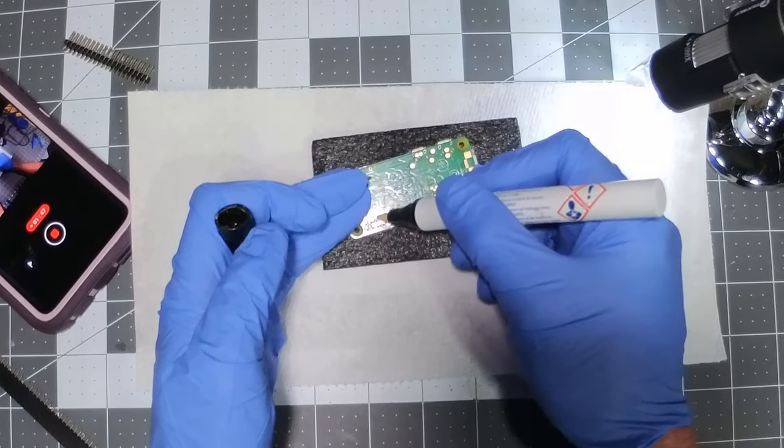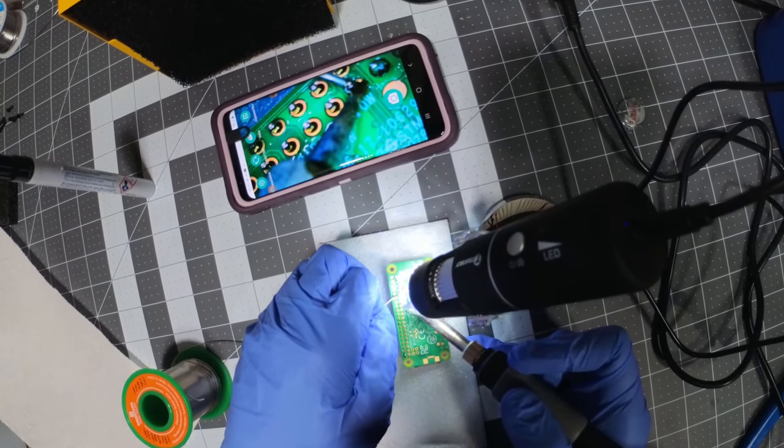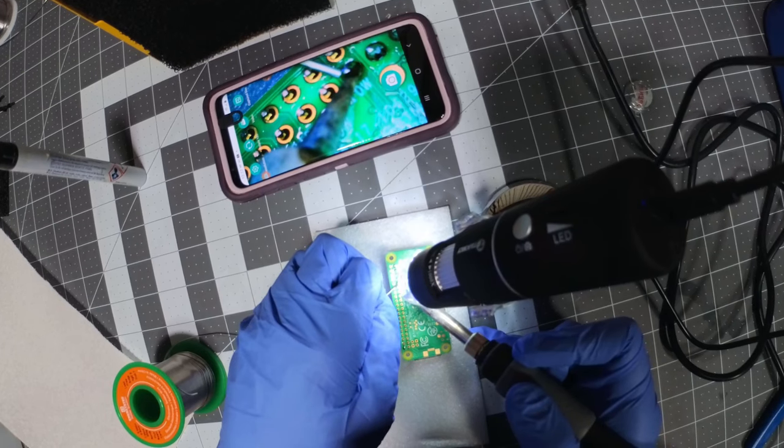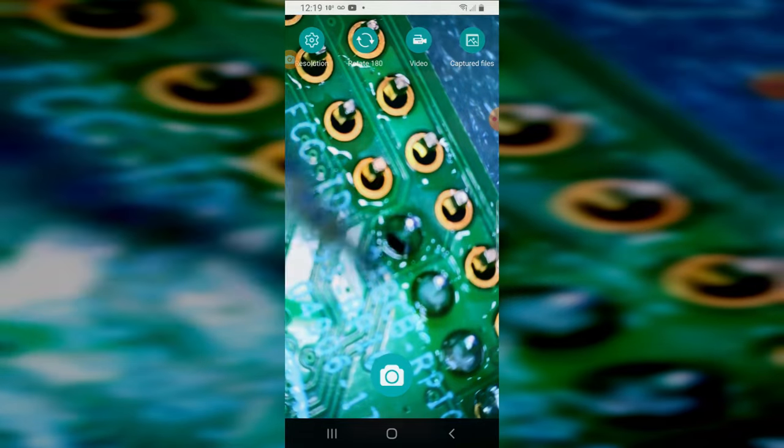Apply rosin to the contacts, fit the header, heat up the pins, and feed the solder to the weld. I'm using a Hakko soldering iron along with a cheap fan and filter for fumes. I also invested in a $32 digital microscope that wirelessly transmits to my cell phone.